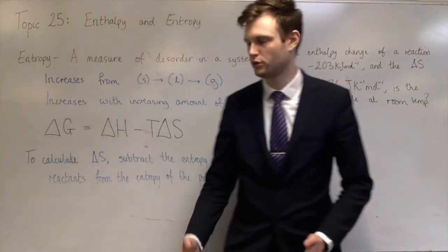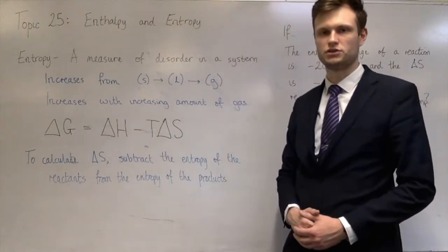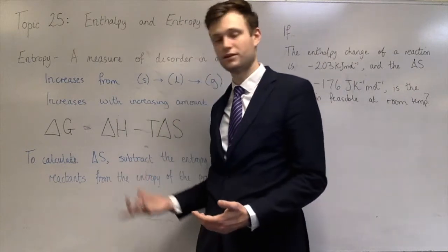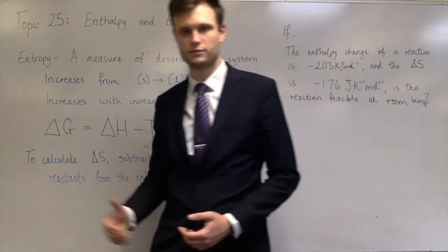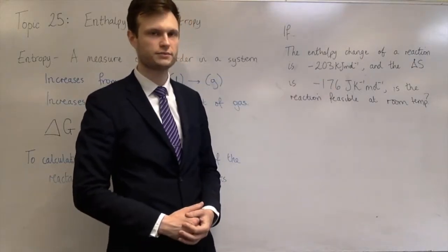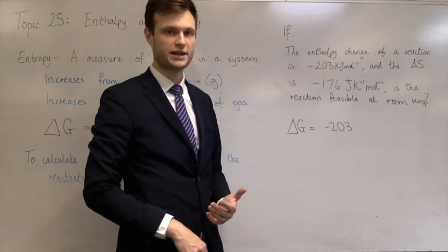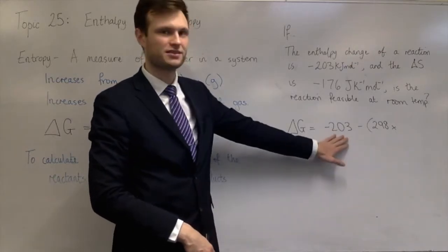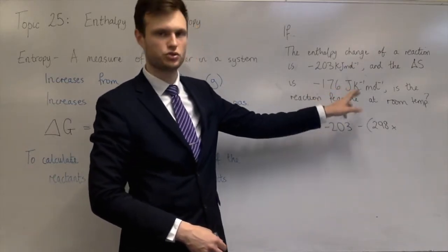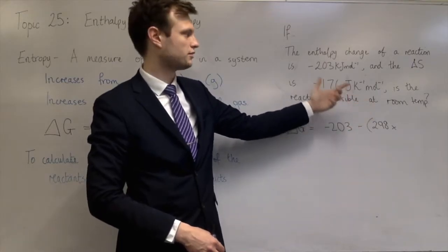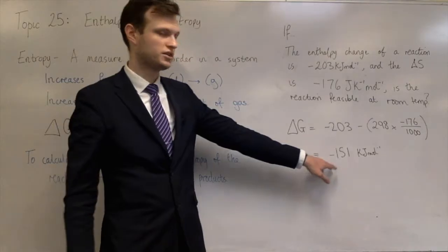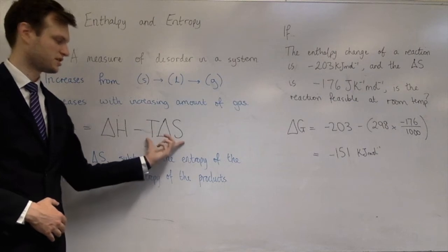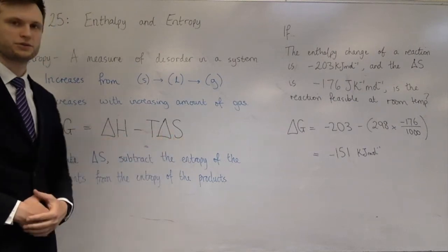To work out that answer, we need to put those values into this equation, the Gibbs free energy equation. If the answer comes out to be less than zero, then yes, it's feasible. If it's greater than zero, then it's not feasible. So delta H is minus 203. T is room temperature, so 298 kelvin. And the entropy change is minus 176 joules per kelvin per mole. I'll put this in as kilojoules, so I need to change this into kilojoules per kelvin per mole so the units are the same, so divide that by 1,000. The answer comes out to be minus 151. So yes, it's feasible at room temperature. And the reason it's feasible is because this term, T delta S, is less negative than delta H is.